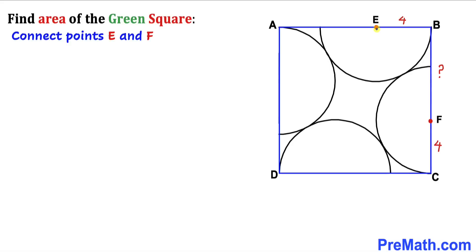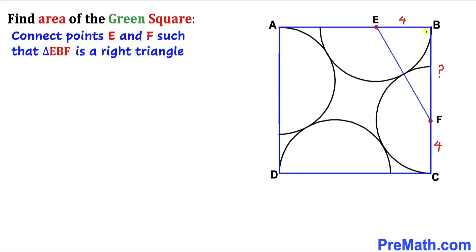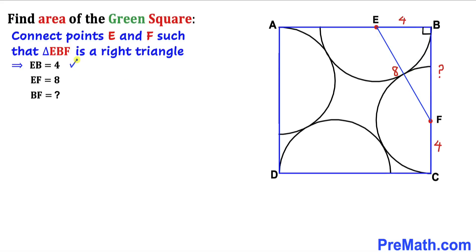We are going to connect these two points E and F. As a result, we can identify triangle EBF as a right triangle, since this angle is 90 degrees. This radius is four and this semicircle radius is four as well, so the total length EF is going to be four plus four, giving us eight units. So we have EB equals four units, EF equals eight units, and now we are going to calculate the length BF.